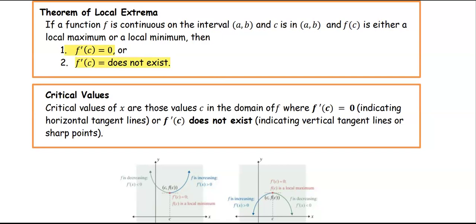This leads to the definition of critical values. The critical values of x are those values c in the domain of f where f'(c) equals 0, indicating a horizontal tangent line, or f'(c) doesn't exist, indicating a vertical tangent line or a sharp point.